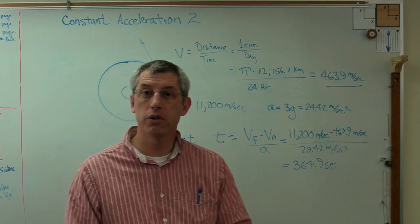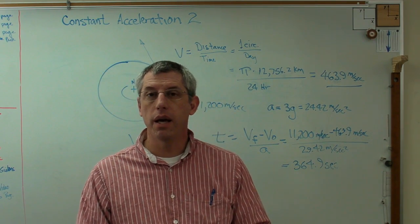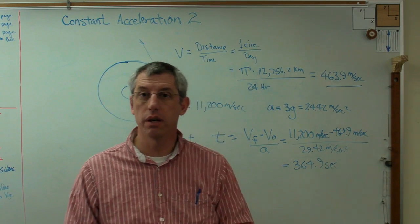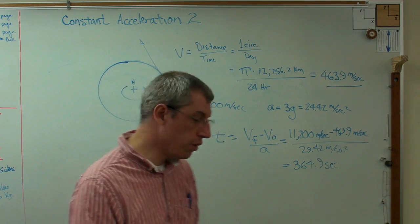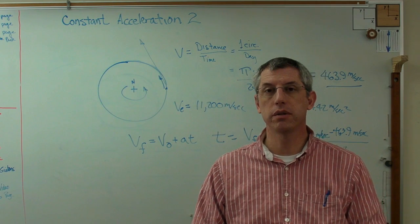So there you go. This is why rockets are launched towards the east, west to east, and why it's really good to have a launch facility close to the equator. Hope this helps, and I'll talk to you next time.